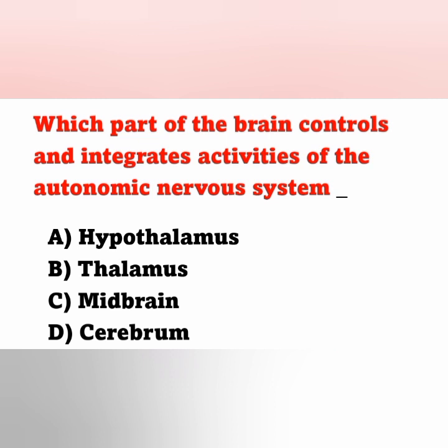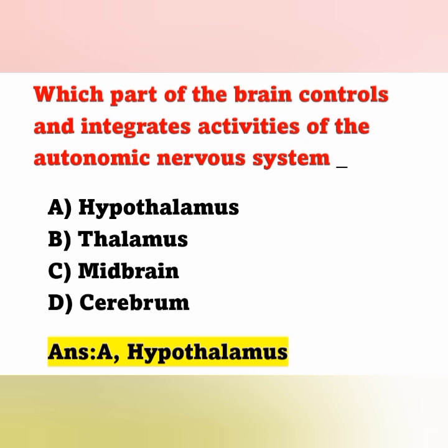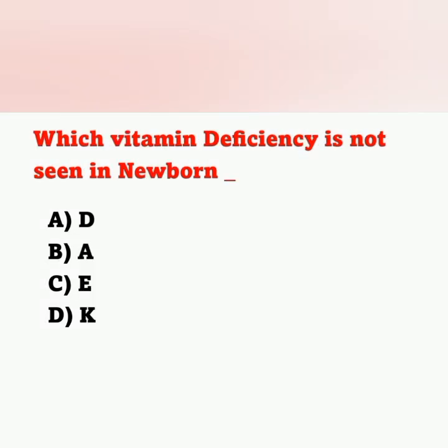Next question: Which part of the brain controls and integrates the activities of the autonomic nervous system? Option A: Hypothalamus, Option B: Thalamus, Option C: Midbrain, Option D: Cerebrum. The correct answer is Option A — the hypothalamus controls and integrates the activities of the autonomic nervous system. Next question: Which vitamin deficiency is not seen in newborns? Option C — Vitamin E is not seen in newborns.